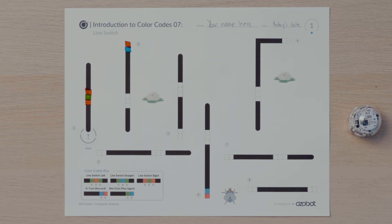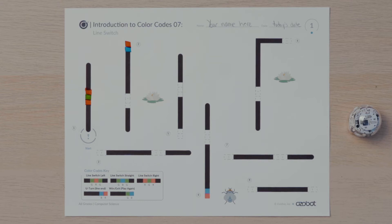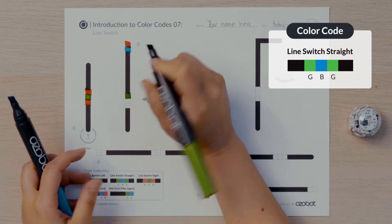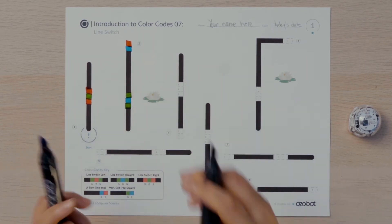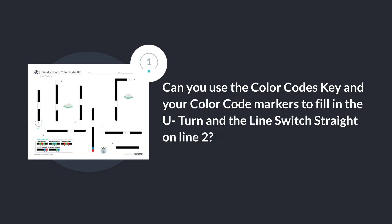Once Ozobot begins to travel down line two, what direction will it need to move to get to line three? Ozobot will need to move straight to move to line three. Can you find the line switch straight color code in the key? I will put in the color sequence green, blue, green into the second set of empty boxes to program Ozobot to go straight and continue moving until it senses line three. Can you use the color codes key and your color code markers to fill in the U-turn and the line switch straight on line two?